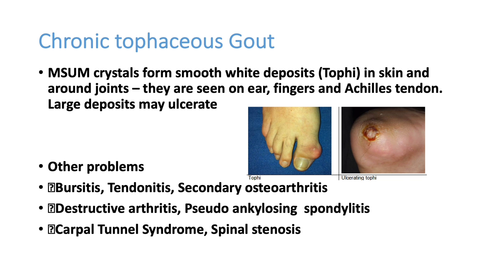Sometimes it can become chronic gout, and patients with chronic progressive gout can also have sudden exacerbations. Periarticular involvement can occur — such as bursitis, tendinitis, secondary osteoarthritis, and destructive arthritis. Carpal tunnel syndrome and spinal stenosis are rare but can also occur.